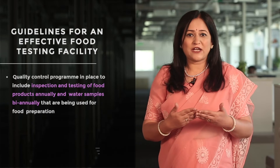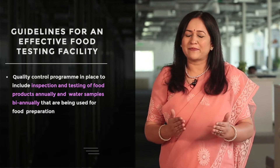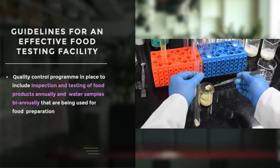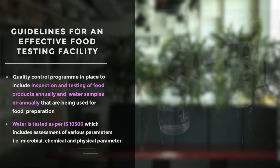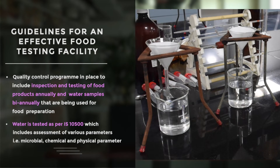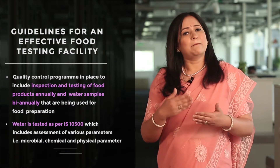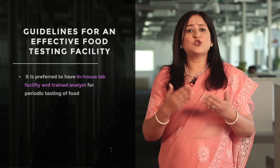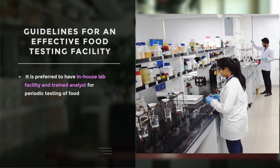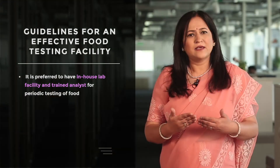Now let's discuss certain guidelines for an effective food testing facility. The food business operator should have a quality control program in place to include inspection and testing of food products biannually and water samples annually that are being used for food preparation. Water is tested as per IS 10500 standards, which include assessment of various parameters — microbial, chemical, and physical parameters.